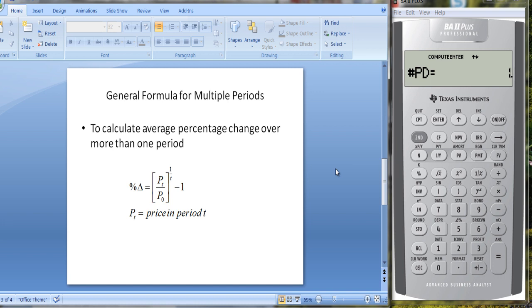Let's take a look at another case. The general formula for multiple periods: if you want to define the average percentage change over more than one period, you would take the price in time period t divided by the price in time period 0, raise it to the 1 over t power, and then subtract 1 from it. P_t is the price in period t, P_0 is the price in time period 0.